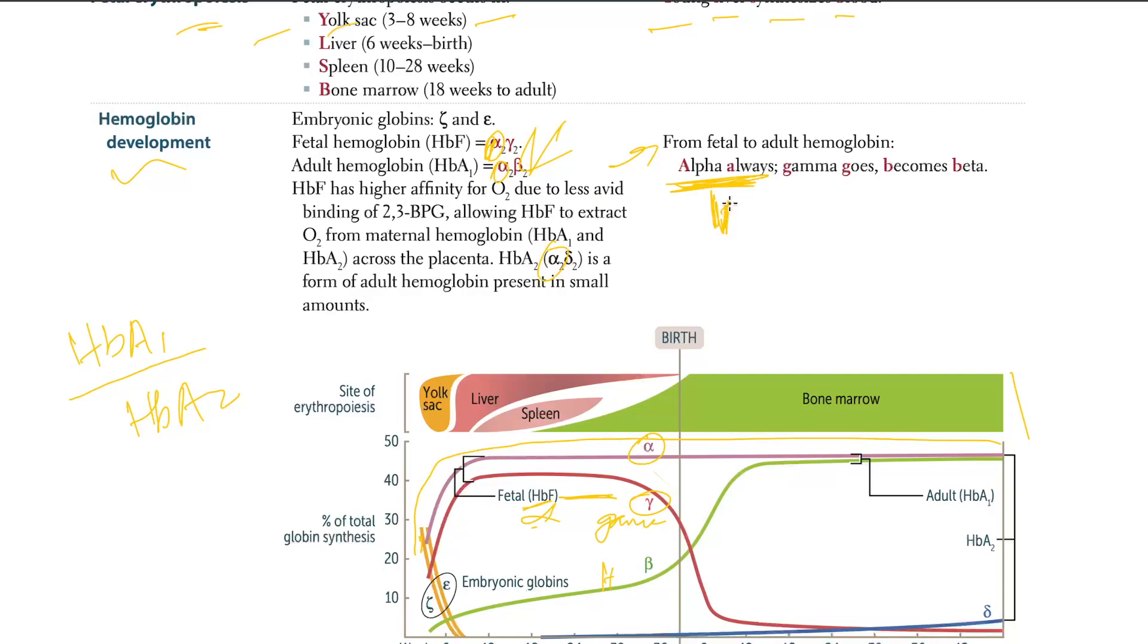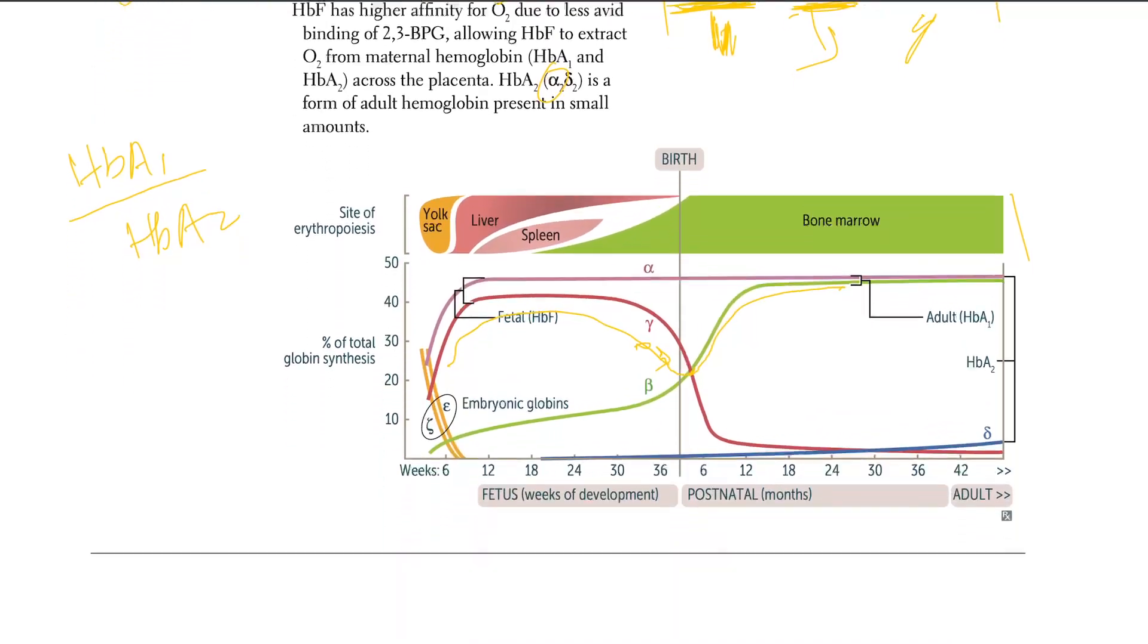But let's look at this mnemonic here. Alpha always got that point. Gamma goes. Let's look at gamma now. Gamma, which is right here. Gamma goes, yes, at birth, becomes beta. So as soon as the gamma is going, look, the trend is that the beta is coming up. So that's a really nice mnemonic to memorize. Alpha is always, gamma goes, G for gamma, G for goes, and beta becomes. So that's pretty much for this thing.